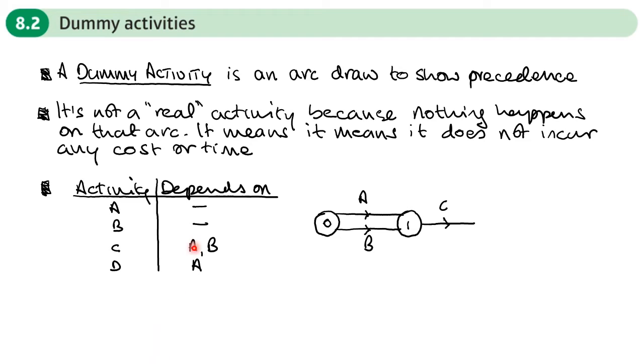And this will happen when you've got two different activities dependent on the same activity but not exactly the same. So C and D are both dependent on A but C is dependent on another activity as well. So when this happens we need to use a dummy activity. So we're going to redraw this again.